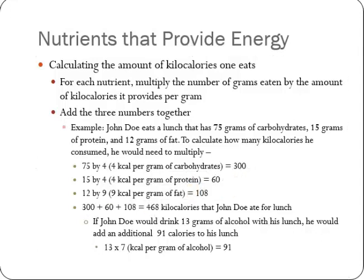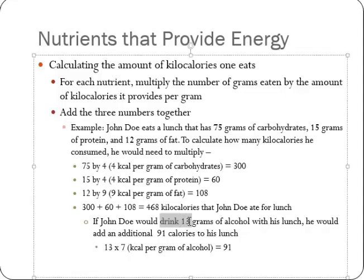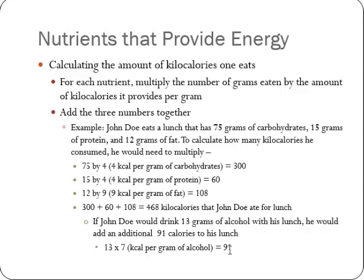468 calories for a meal sounds like a lot, but the truth is it's really not — you'd be surprised how quickly it adds up. If John Doe also drinks 13 grams of alcohol with his lunch — a martini with his tuna fish sandwich — you add 13 times 7 equals 91 calories. John Doe's tuna fish sandwich with extra mayo and a martini would have a grand total of 559 calories.